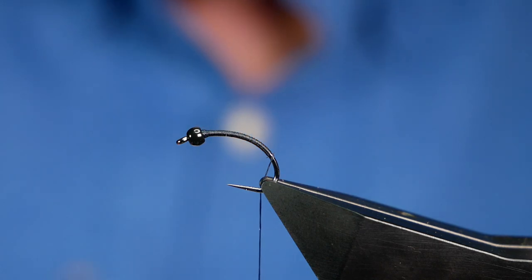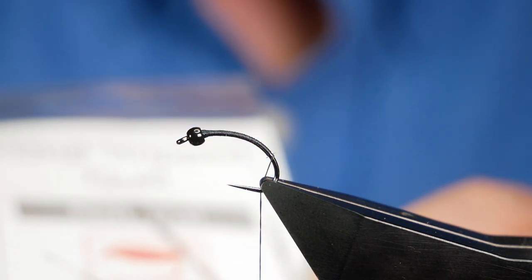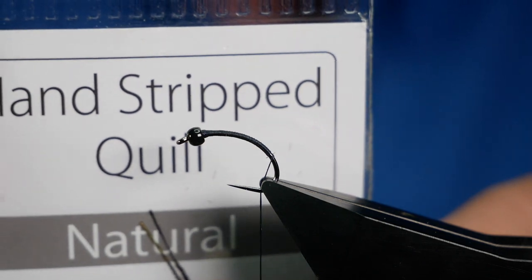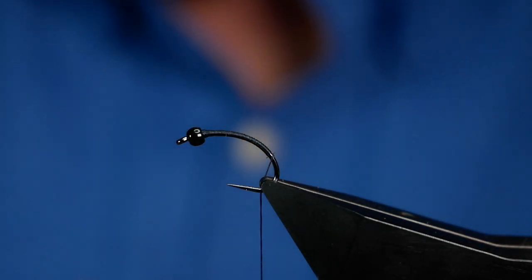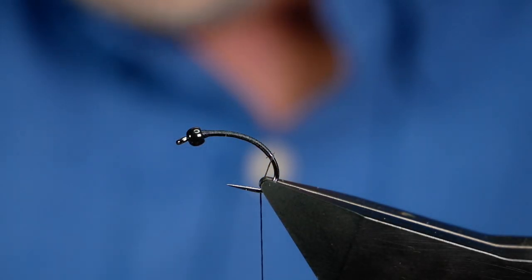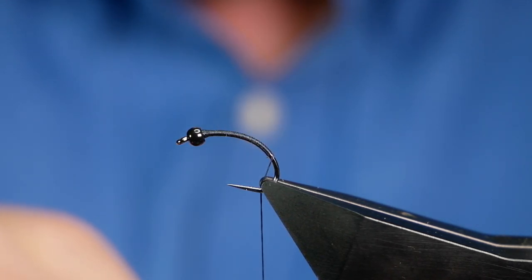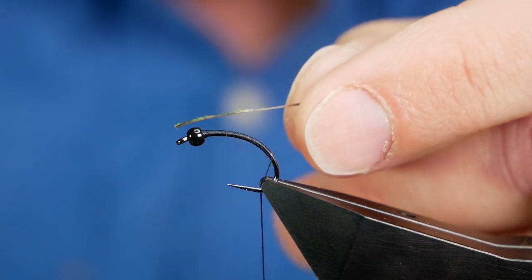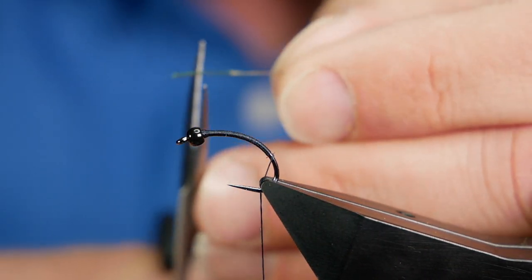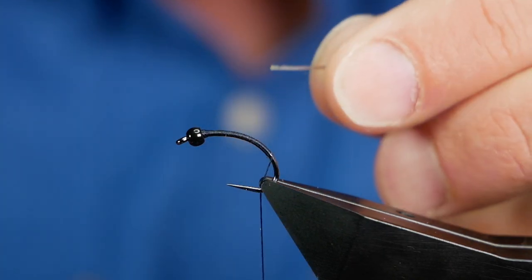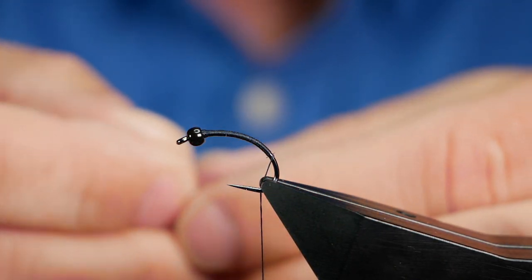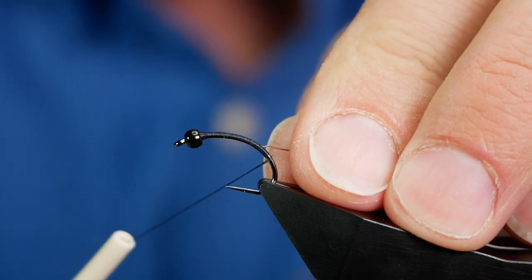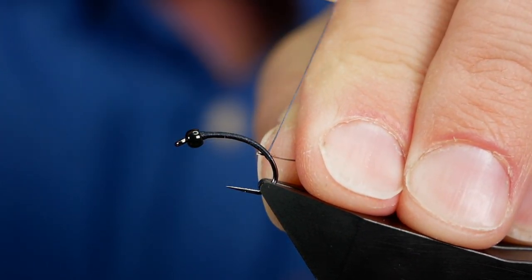Next then I'm going to add in my rib and I'm using some of the hand stripped Polish quills. This is the natural. I've found that these are the best quills for doing these types of buzzers. They've just got lovely definition to them and what I'm going to do initially is just take off that waste piece and then I'll just catch that in at the bottom there.